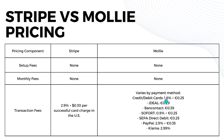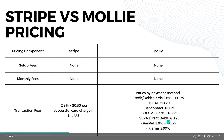For Mollie's transaction fees: credit and debit cards are 1.8% plus €0.25; iDEAL is €0.29; Bancontact is €0.39; Sofort is 0.9% plus €0.25; SEPA direct debit is €0.25; PayPal is 2.9% plus €0.35; and Klarna is 2.99%.